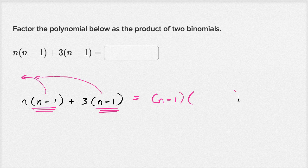And what are we going to have left over? Well, if you take out the n minus one here, if you undistribute it out, you're just going to be left with that n. So you're gonna have an n there. And then for this second term, you factor this n minus one out, you're just gonna be left with this positive three, plus three.